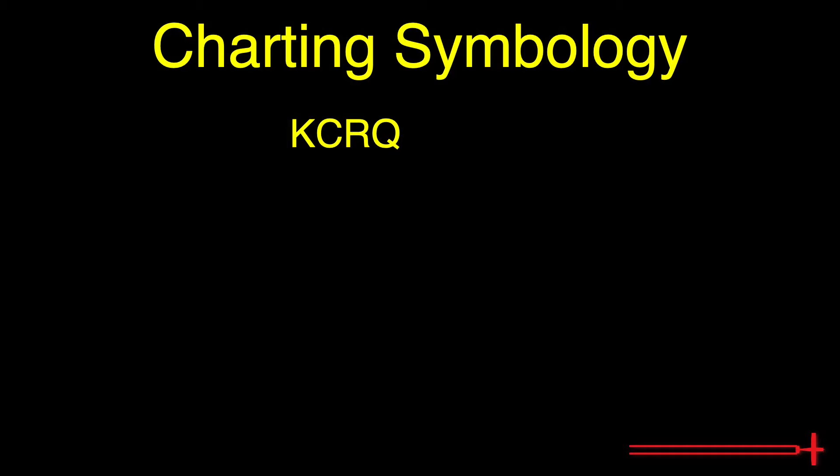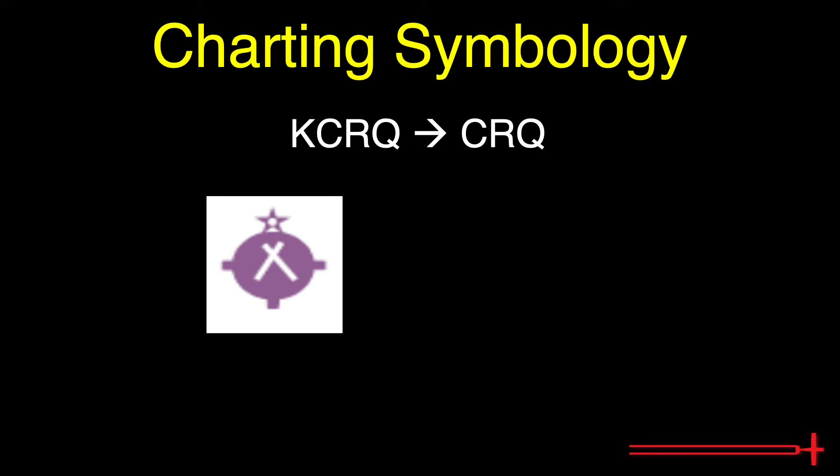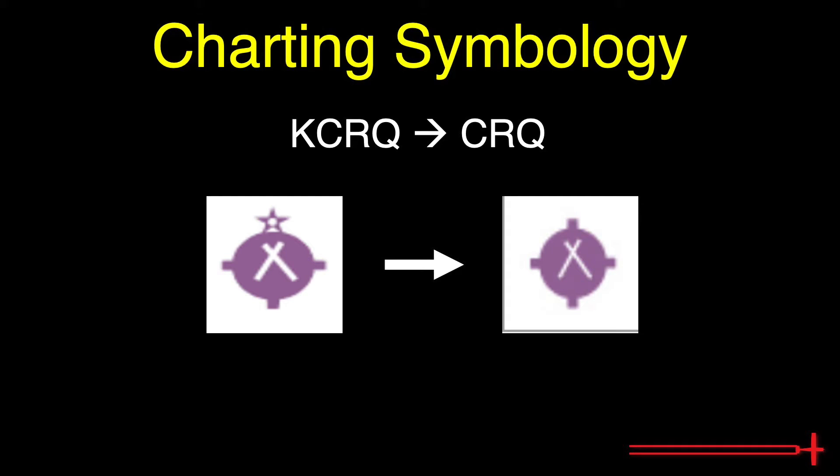The charts have changed only a little bit recently. The K in front of the airport's ICAO identifier is no longer depicted. Fuel services were previously depicted by three tick marks surrounding the airport; now they're depicted by four. In order to keep this video organized, we will split the chart symbols into seven sections.